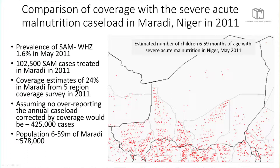There are several NGOs there, such as Befen, Forsani, MSF, ACF, and Alima. They support health districts with very high quality care and training for other regions and other countries. In 2011, one-third of the new admissions in Niger were delivered in Maradi. If you expect to find high coverage anywhere, you might expect to find it there. But let's look at the details.